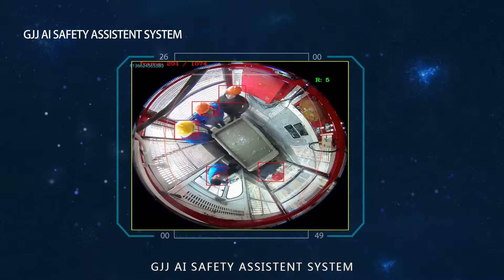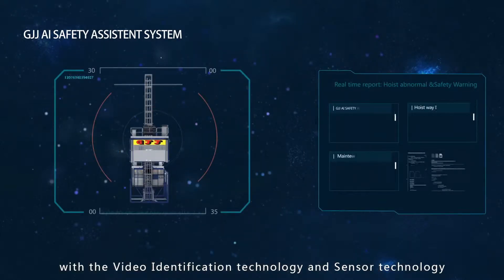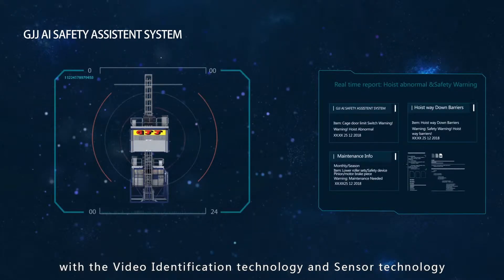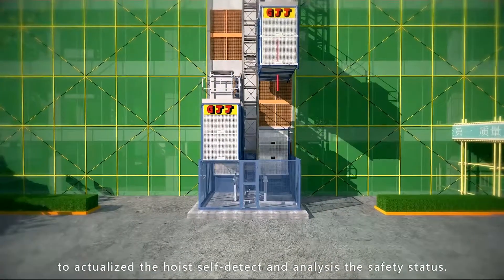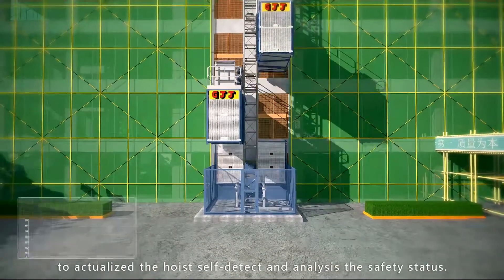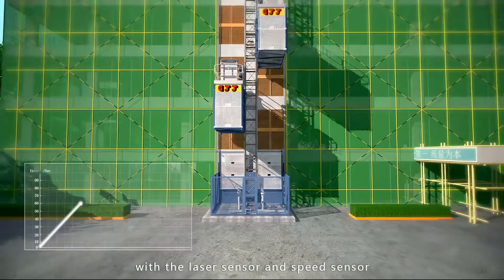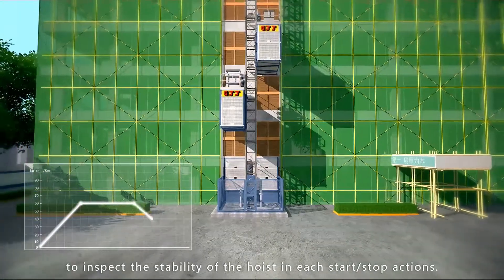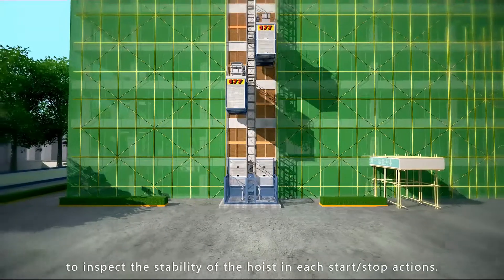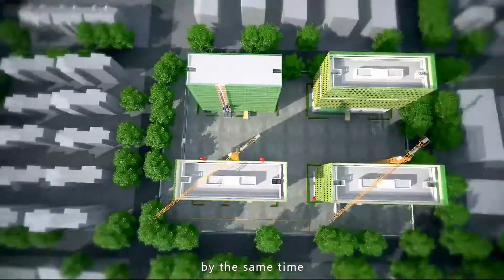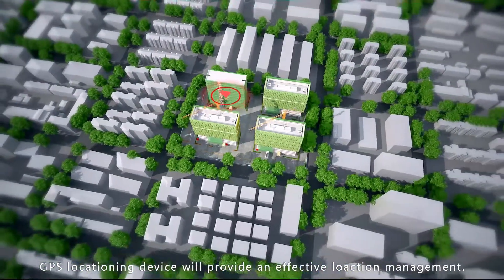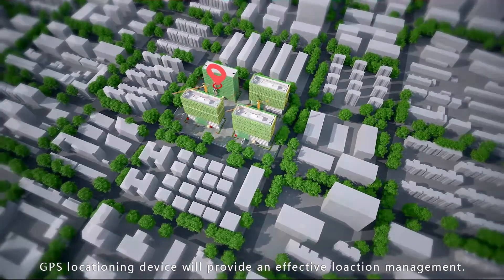GJJ AI safety assistance system with video identification technology and sensor technology to actualize the hoist self-detect and analyze the safety status. With a laser sensor and a speed sensor to inspect the stability of the hoist in each start-stop action. At the same time, GPS positioning device will provide effective location management.